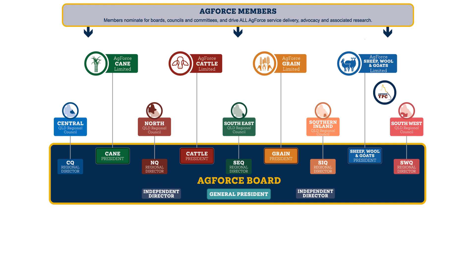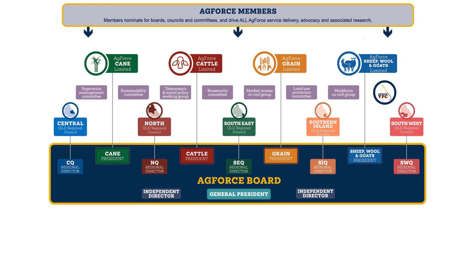Every other year, in our non-election years, we consult all AgForce members to find out what issues are the most important ones to the members in their industry and in their region. And from this we rank the biggest issues that face all four commodities and all five regions. We call these our cross-cutting policy issues. For these issues, we invite all members again to join working groups and policy committees, and over 60 more positions are filled.